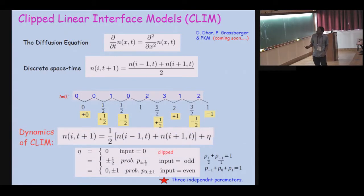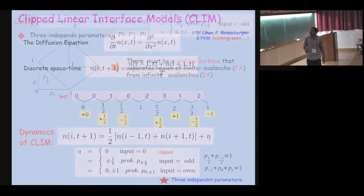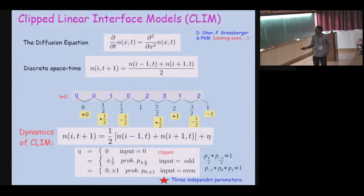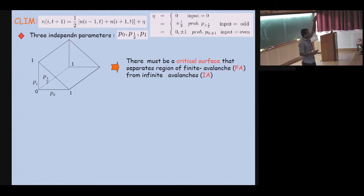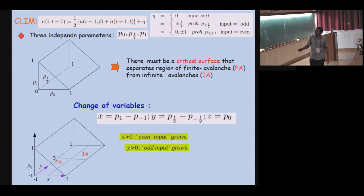The full phase space has three parameters — p0, p1, and p_half — where p0 plus p1 must be less than one, forming a triangle, and p_half can range from zero to one. The full phase space looks like a prism. Inside the prism, since you are adding and deleting particles, if the probability of adding is higher the surface can grow to infinity. The prism has two parts: one where the surface goes to zero and one where it goes to infinity. There is a surface dividing finite avalanches from infinite avalanches, and you study the critical behavior on that surface.